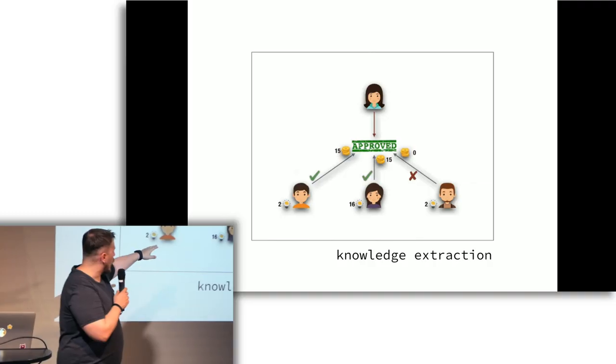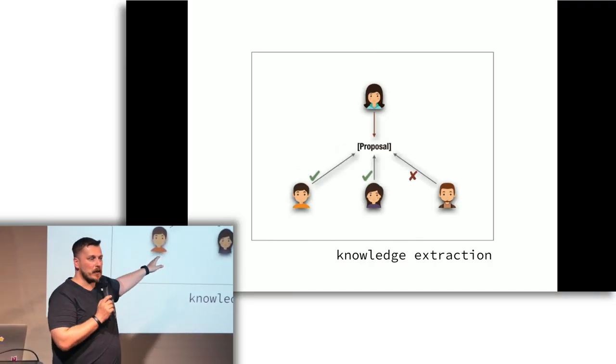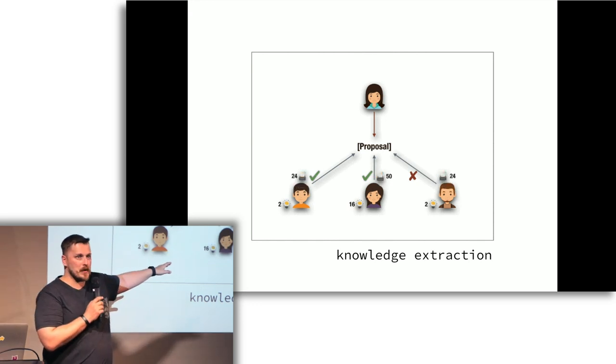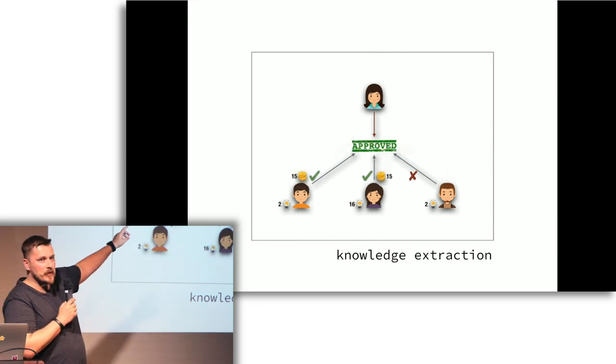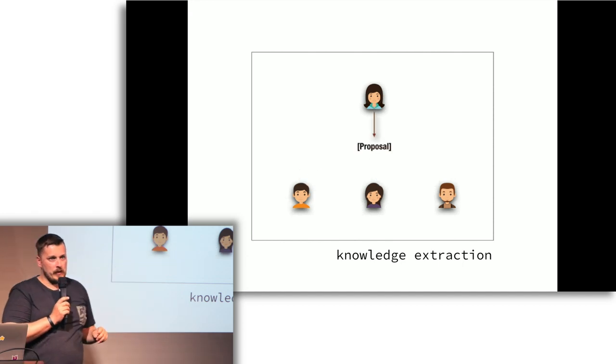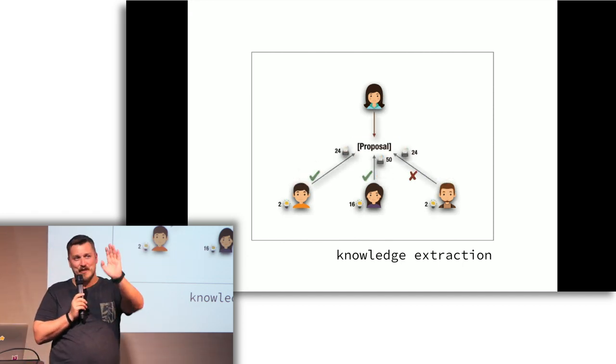Audience: After the vote is decided, the losers' stake is divided amongst the winners - have you given thought to the rules on that last step? Yes, there's some math formula behind it. The idea is that you use a quadratic factor of the knowledge tokens multiplied by the stake you give in. That's a conversation for a second beer.